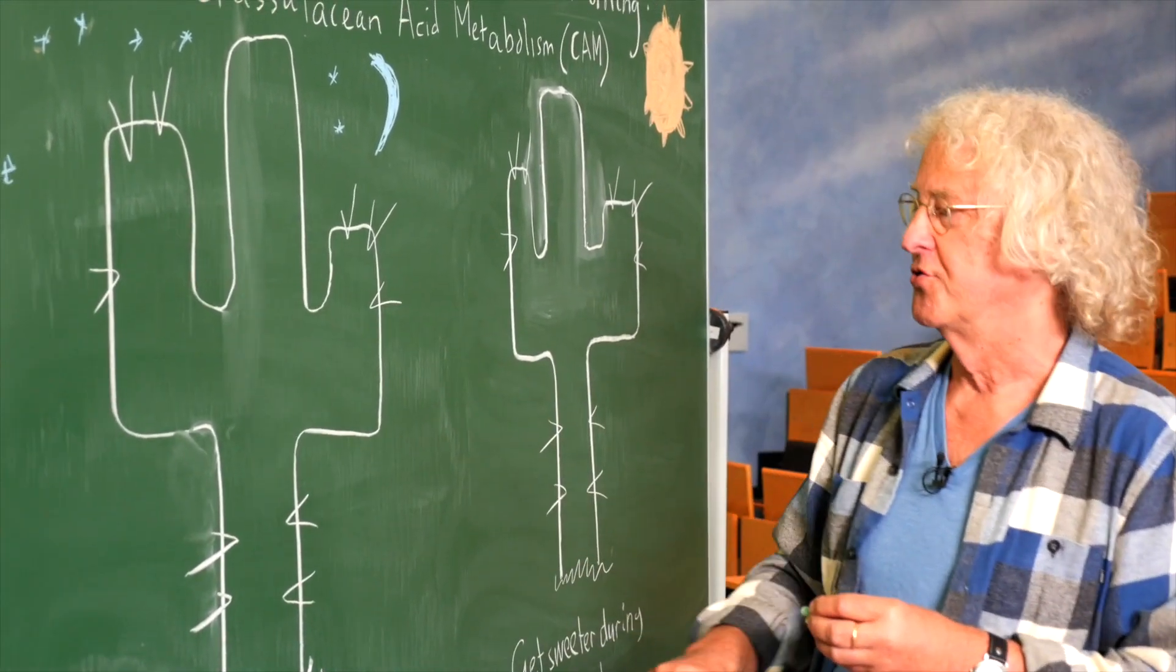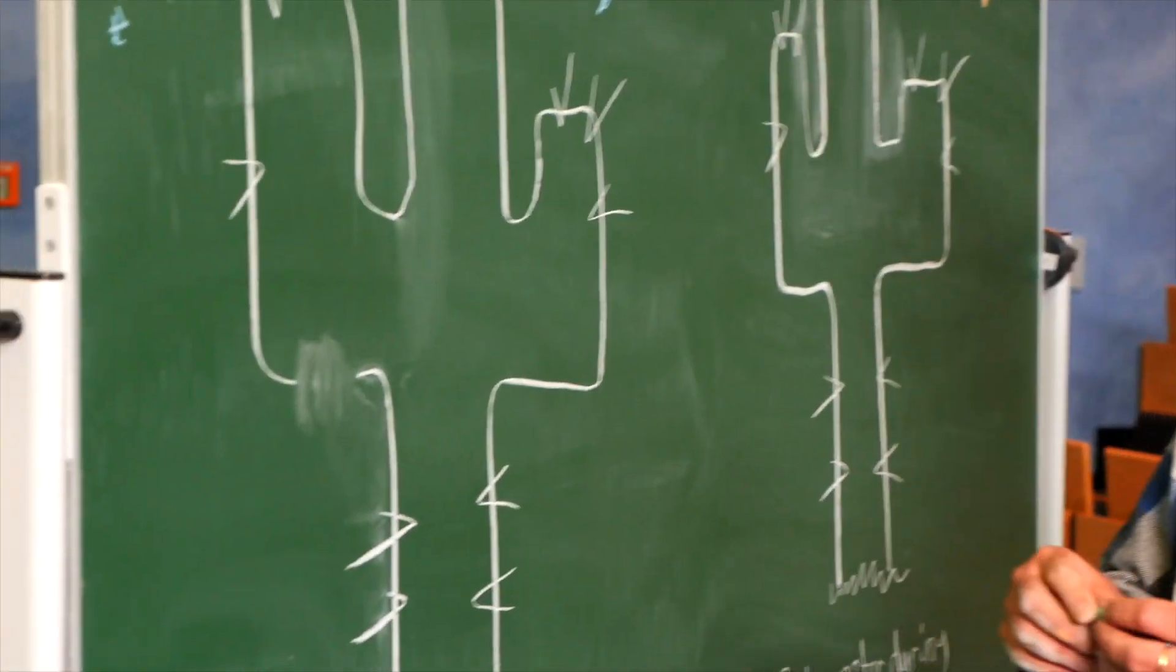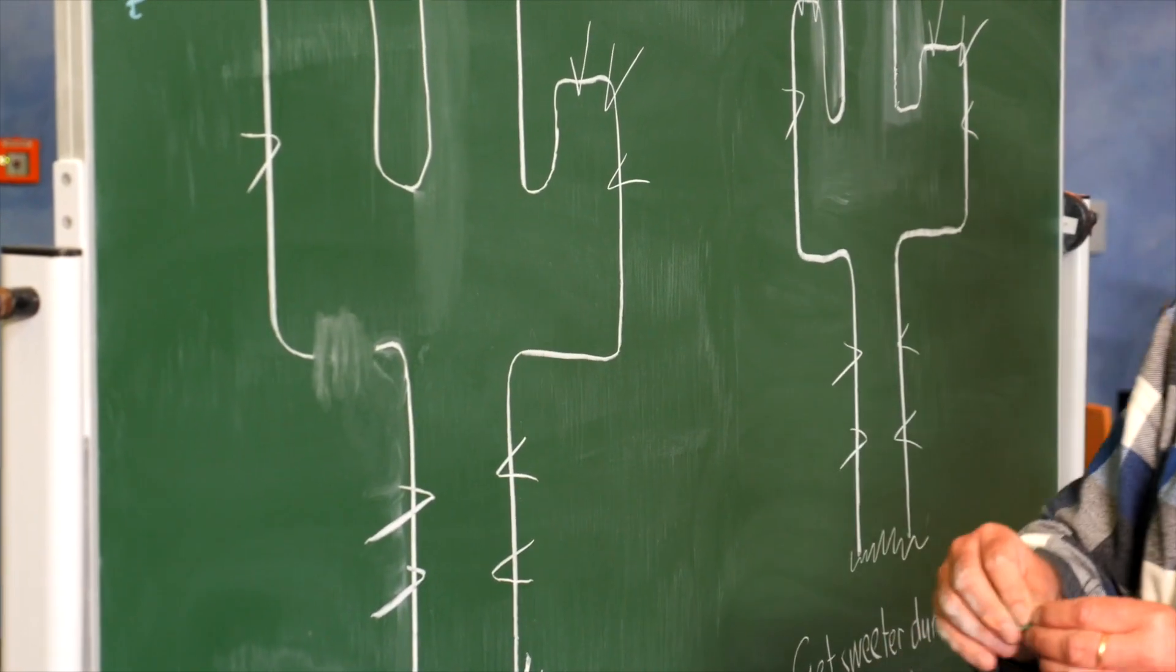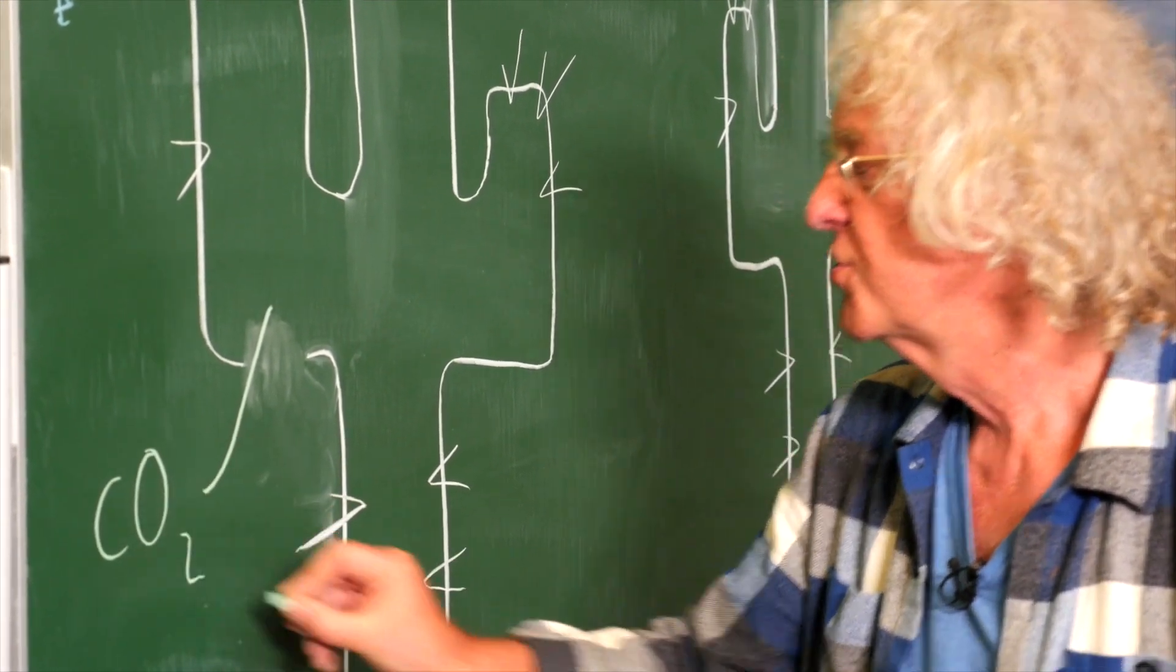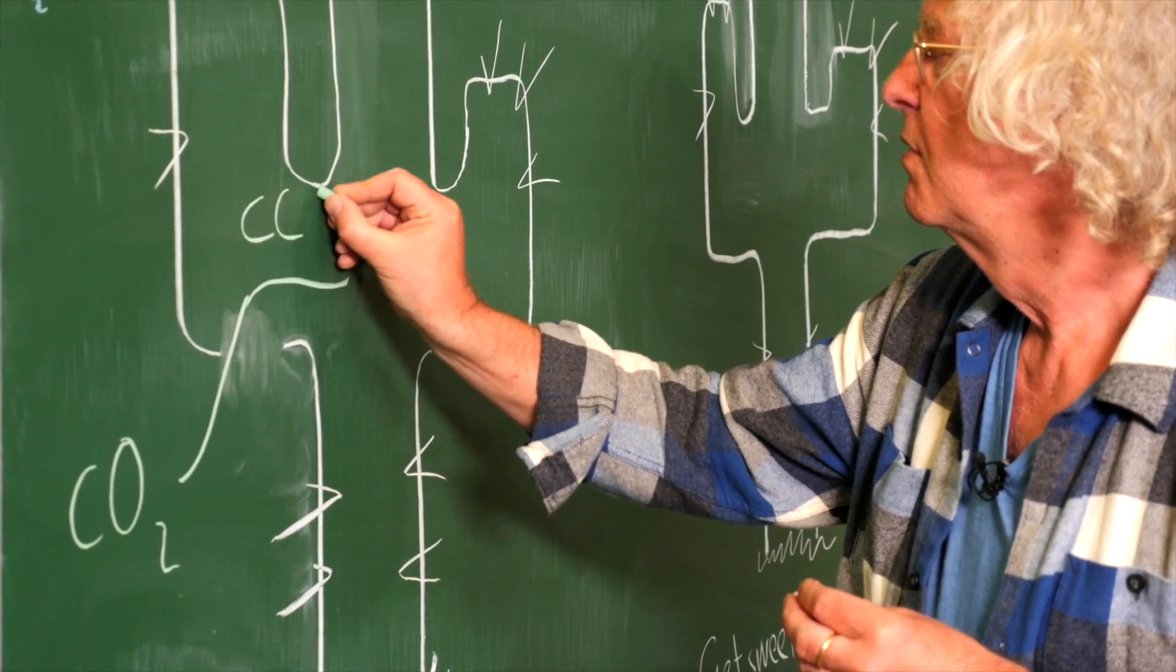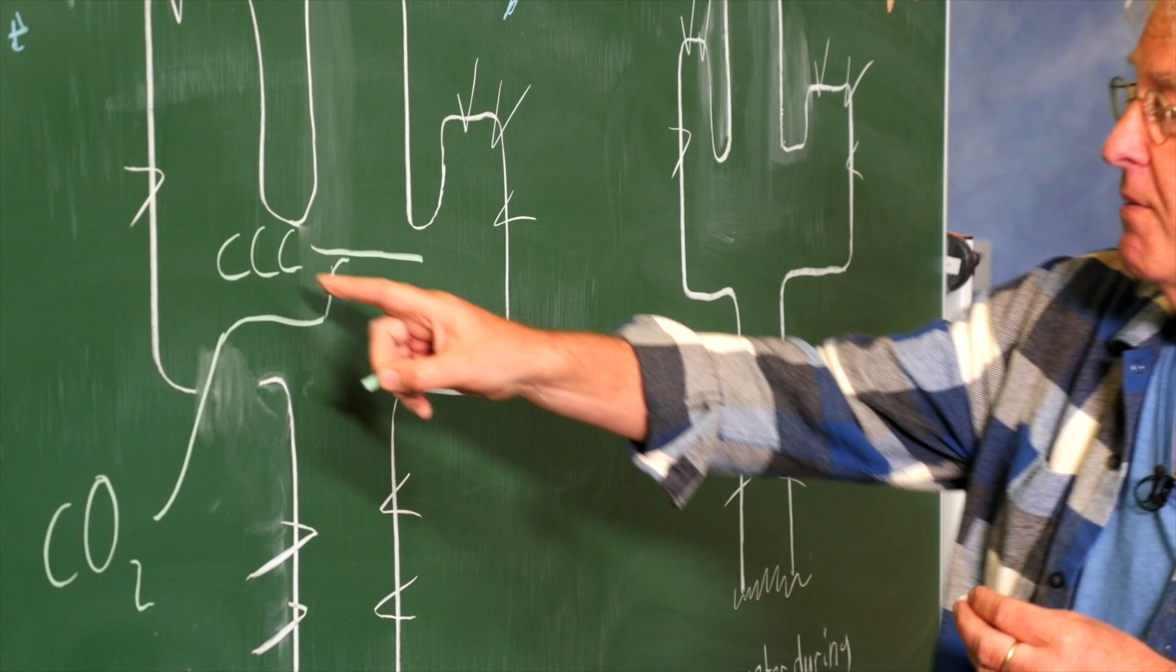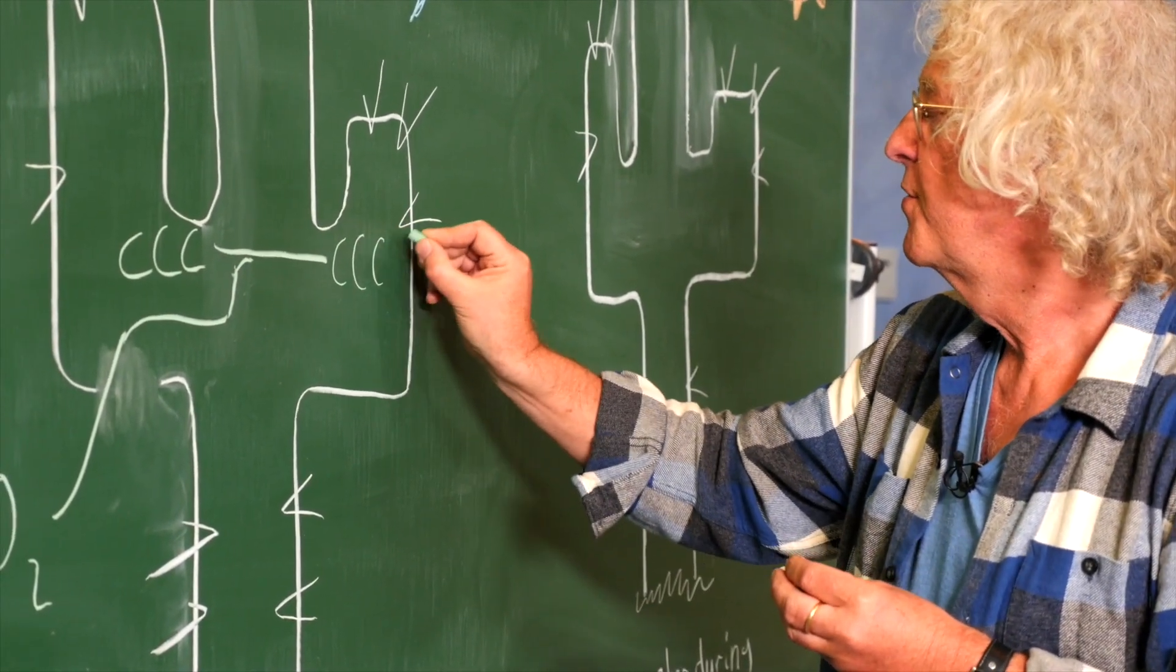What do the CAM plants do? They open their stomata at night. So I've just rubbed away a little piece, this is the stomata, and the CO2 comes inside the plant and then reacts with a three carbon compound to make a compound with four carbons.